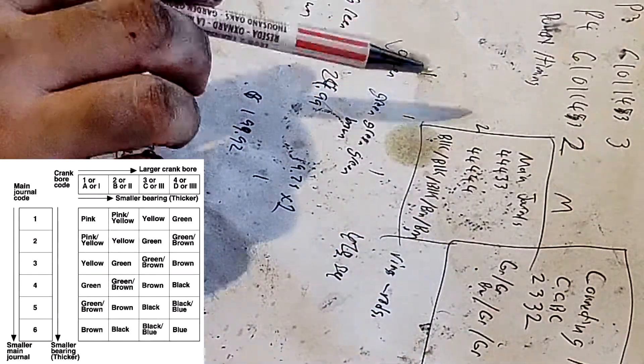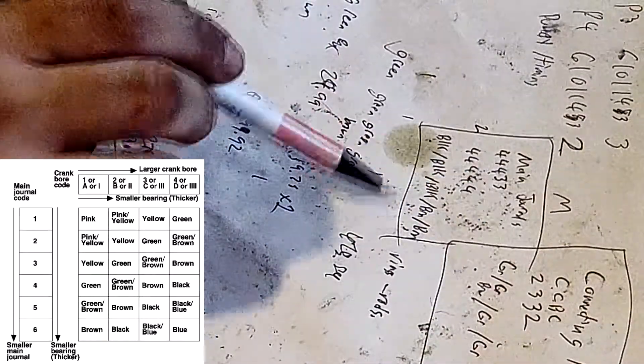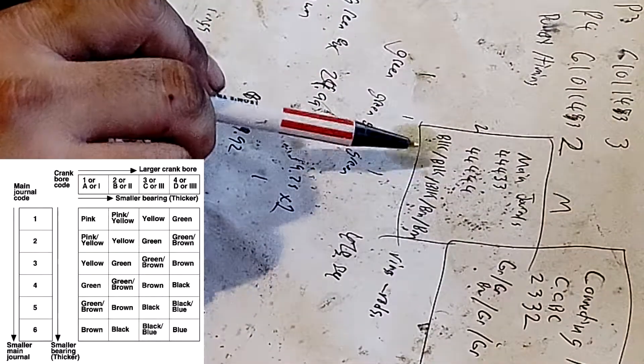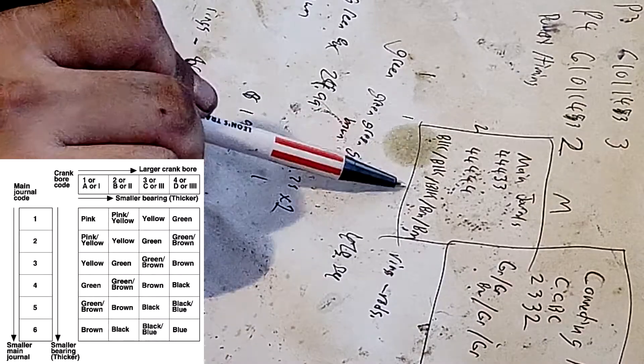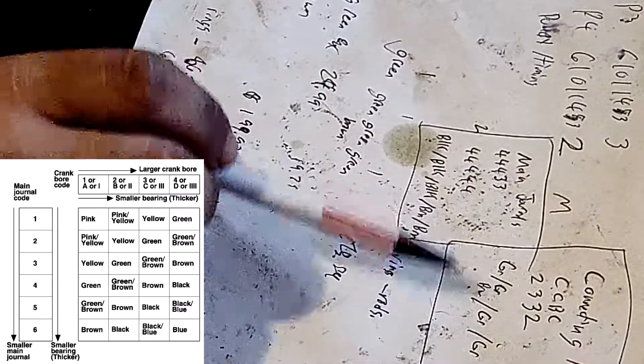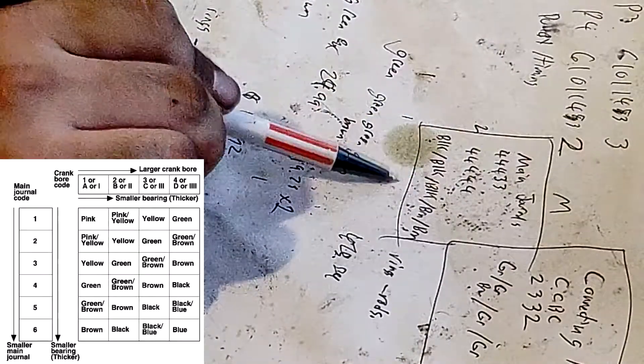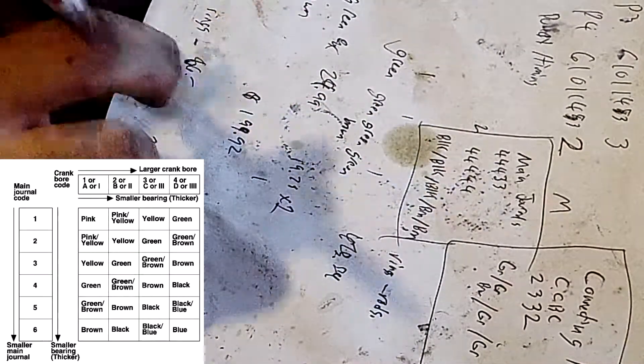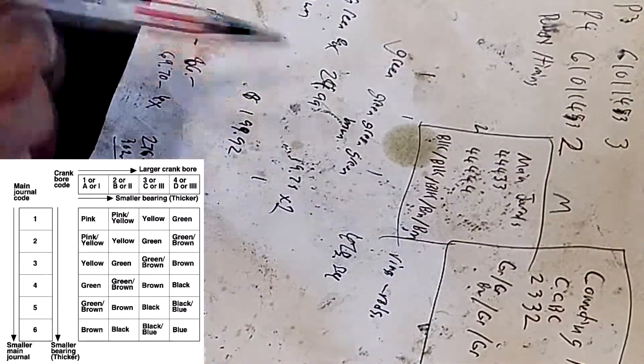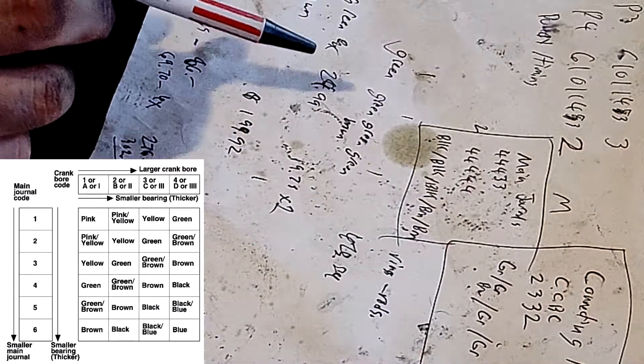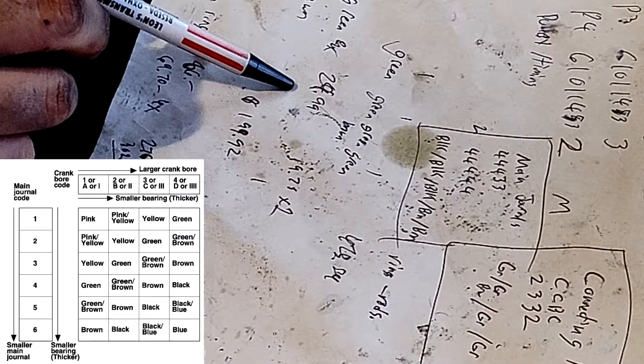Now I could go with aftermarket and these color codes do translate into a specification, so I could find an aftermarket bearing that adheres to the specification based on these color codes. But I'm going to try to get the OEM bearings. I've called up a few dealerships, you can see some other scribbles here. One dealership I called wants $24.99 per bearing.